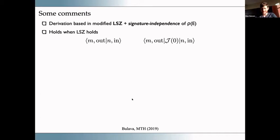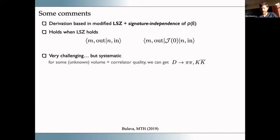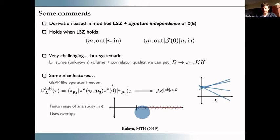A few comments: the derivation is really just based on the LSZ reduction formula, so it holds whenever LSZ holds — for any n-to-m transition including those with an external current, and for any energy regime one can access. It's very challenging but systematic, pushing the challenge into the algorithmic side: if you can give me good enough data and large enough volumes, I can get any amplitude I'm after. Although in practice it will be very difficult, it has features known to be useful from other analysis contexts.